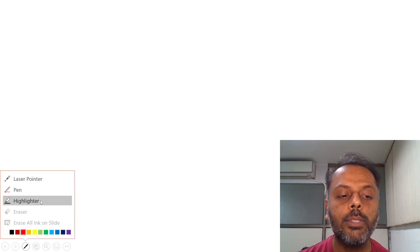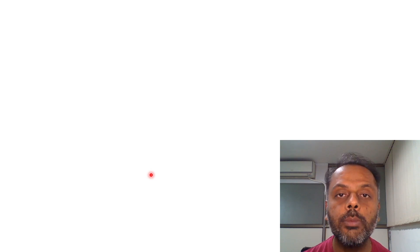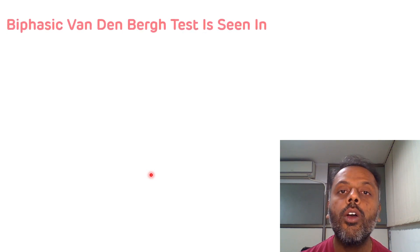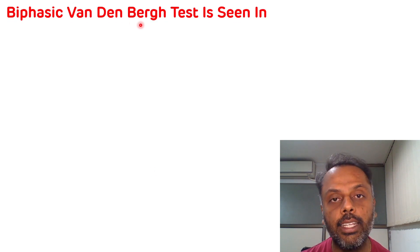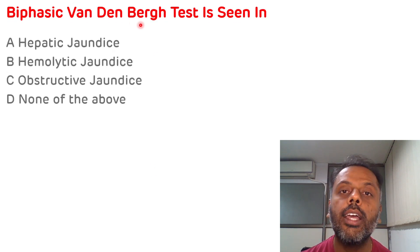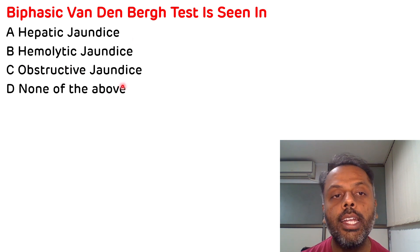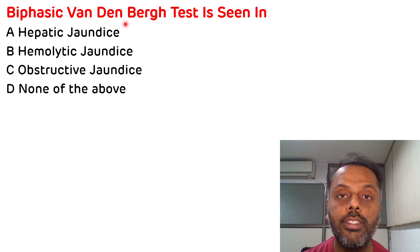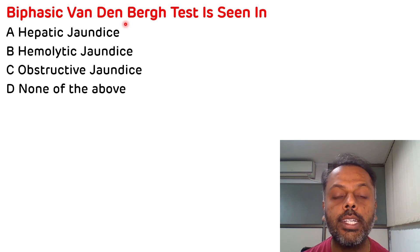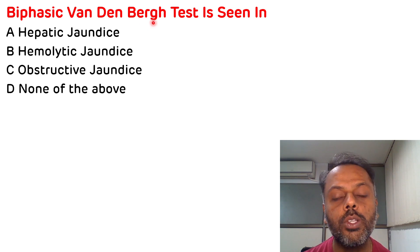Hello everyone, welcome to my YouTube channel, Biochemistry Basics by Dr. Amit. This is the continuation of the video series on important higher multiple choice questions of biochemistry. Today's multiple choice question is: biphasic Van den Bergh test is seen in — and the options are hepatic jaundice, hemolytic jaundice, obstructive jaundice, and none of the above. This question is very important because it is frequently asked in various entrance examinations. So let's discuss this question.